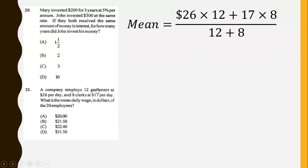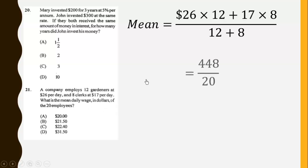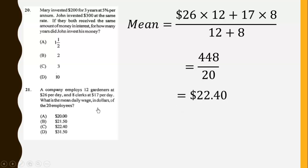A company employs 12 gardeners at $26 per day and 8 clerks at $17 per day. What is the mean daily wage of the 20 employees? We find the total sum of money and divide by 20: (26 times 12) plus (17 times 8), divided by 20, gives a mean daily wage of $22.40.